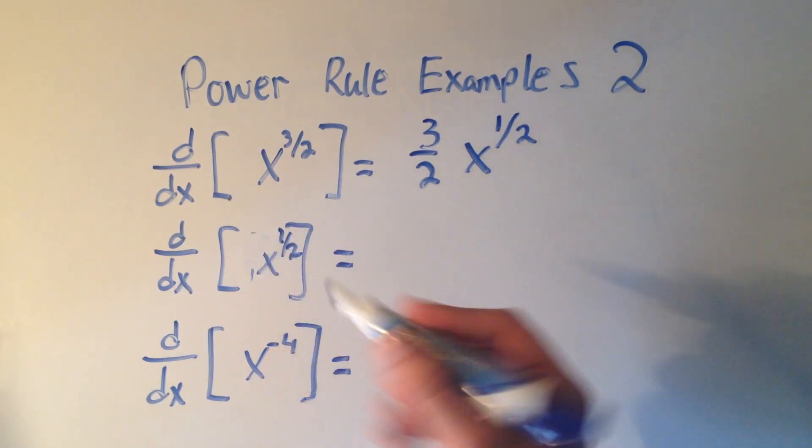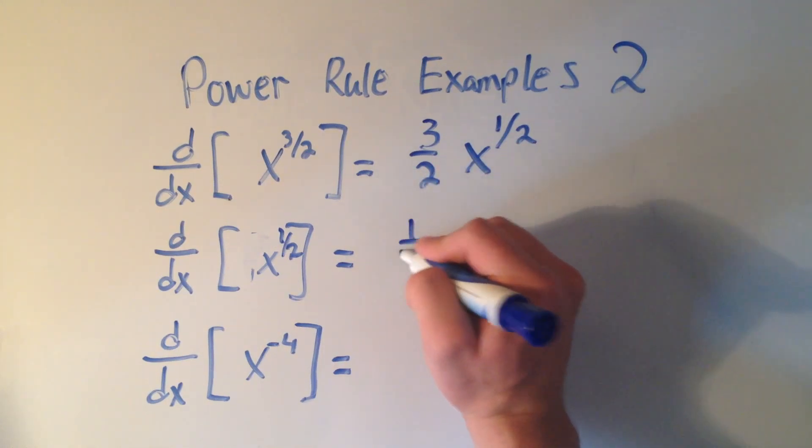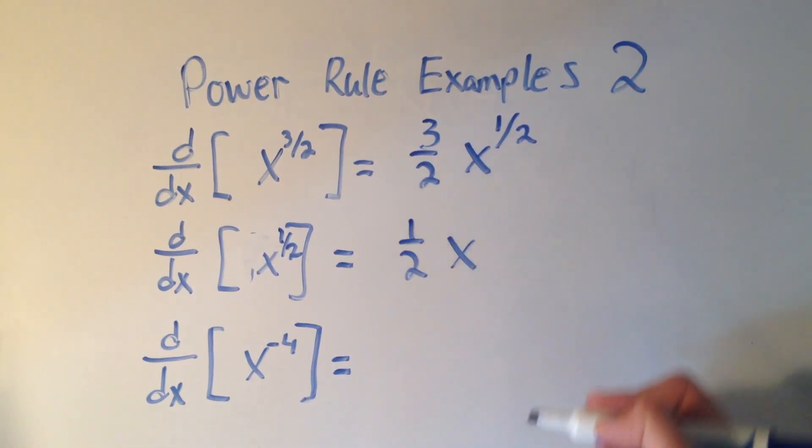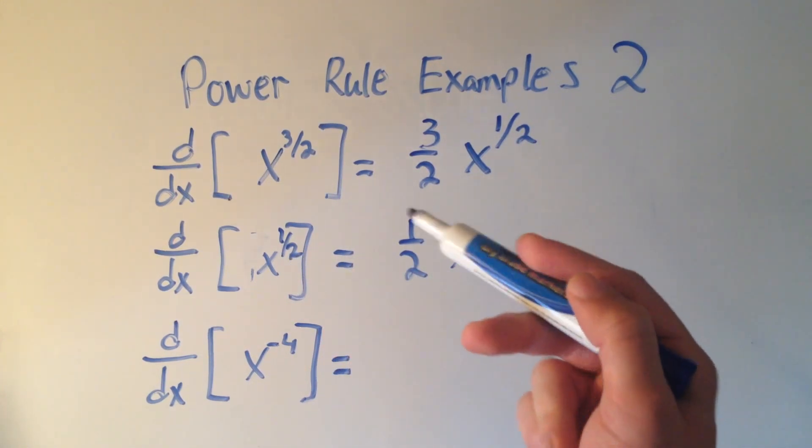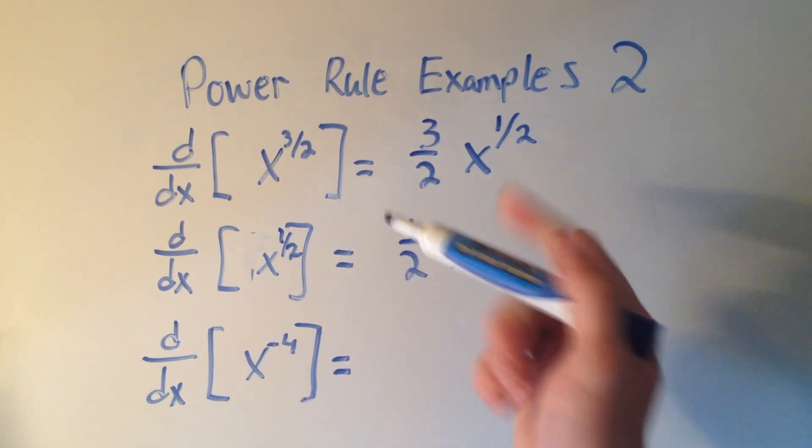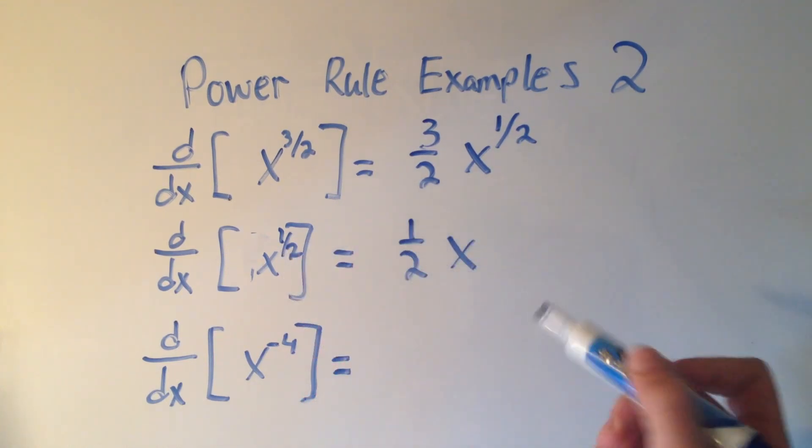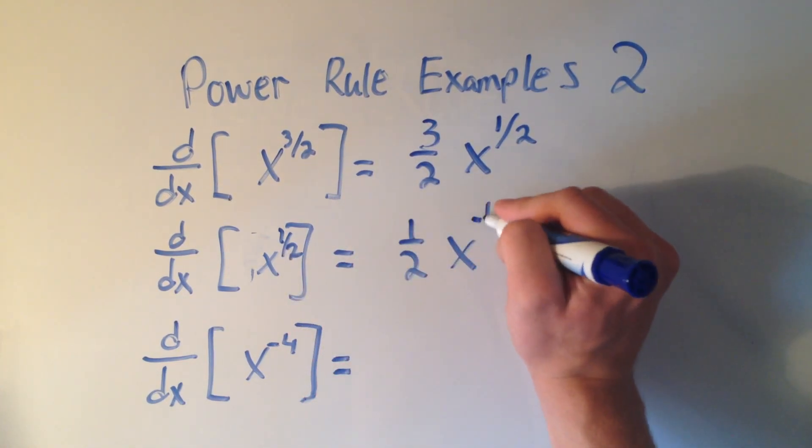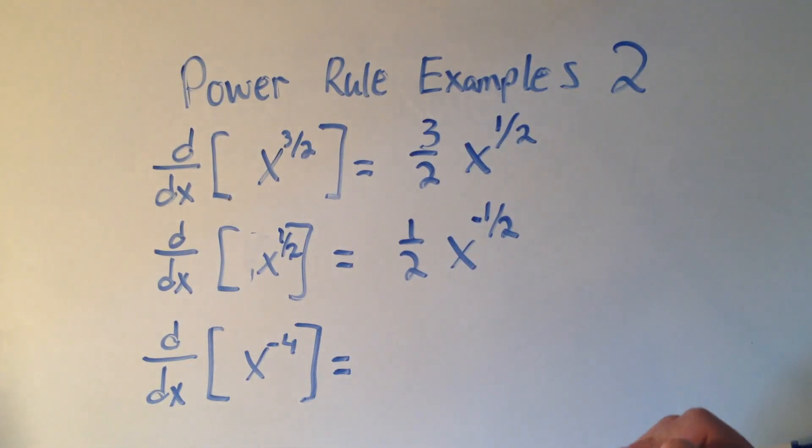I multiply by the exponent, so 1 half x, and then I have to do 1 half minus 1. And this is where I see a lot of mistakes. 1 half minus 1 is negative 1 half. 1 half minus 2 over 2.